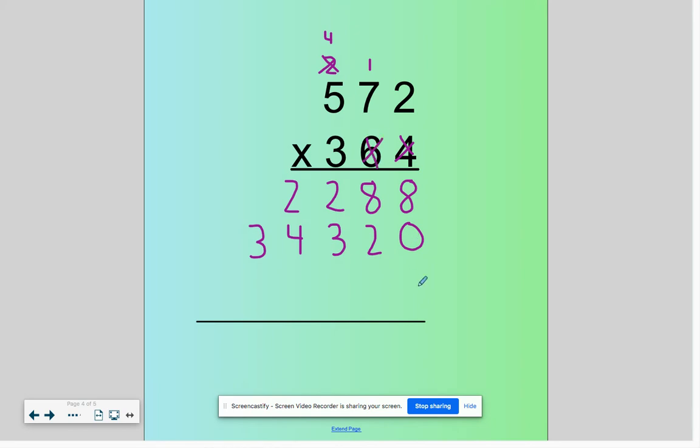Kill the 6. Now we have to bury it with 2 zeros. Since our 3 is worth 300, we need those 2 zeros as placeholder spots. 3 times 2. Let's get rid of these first. 3 times 2 is 6. 3 times 7 is 21. Put the 1, carry your 2. 3 times 5 is 15, plus 2 is 17.